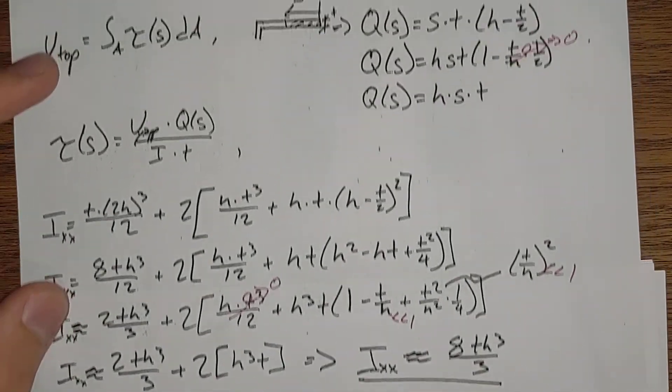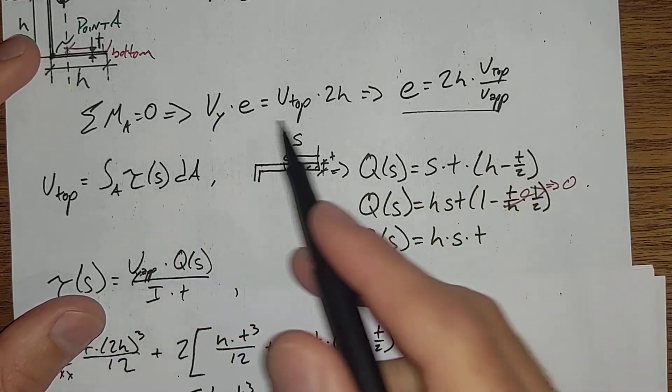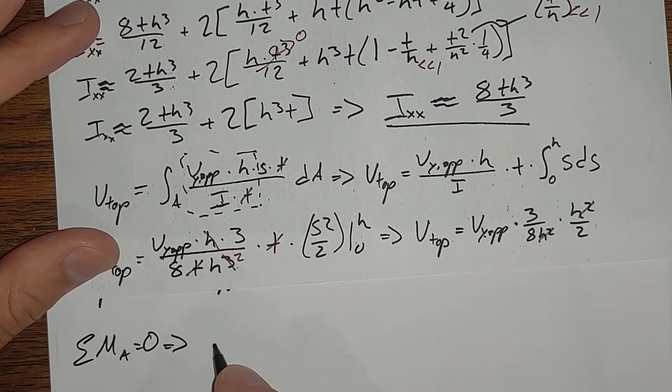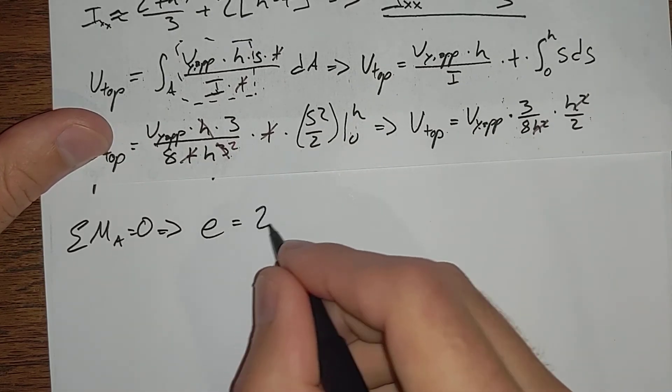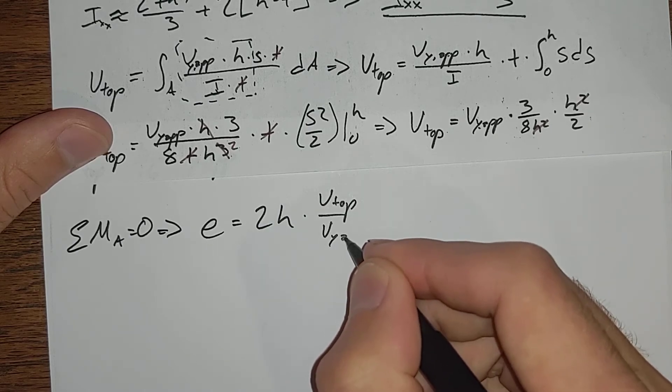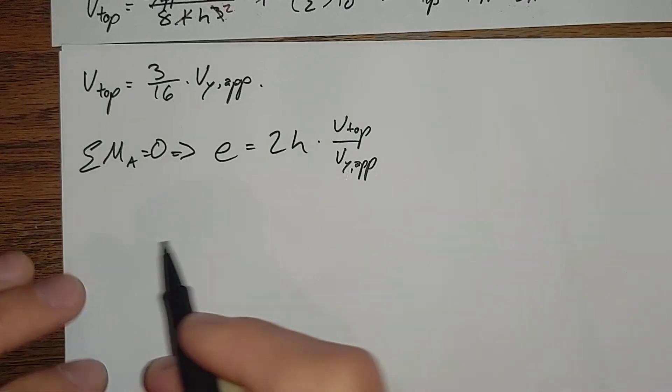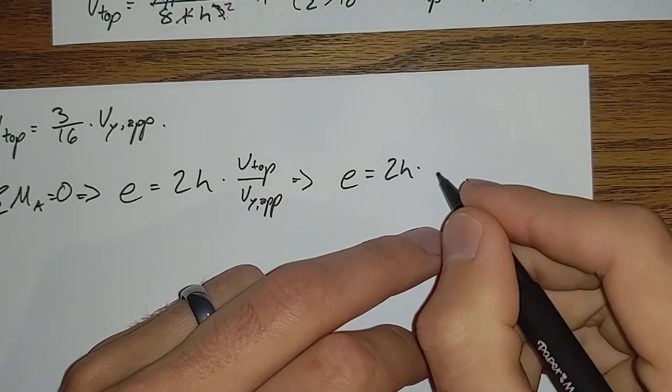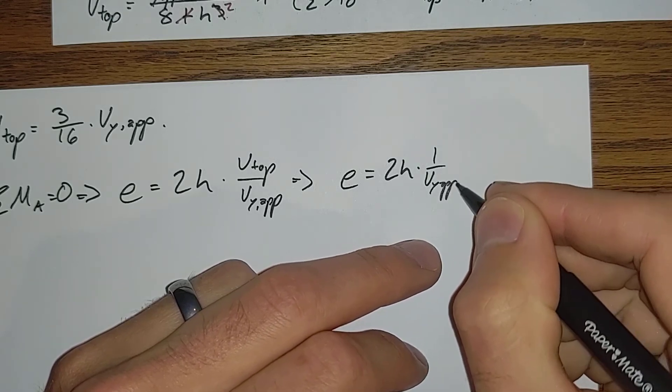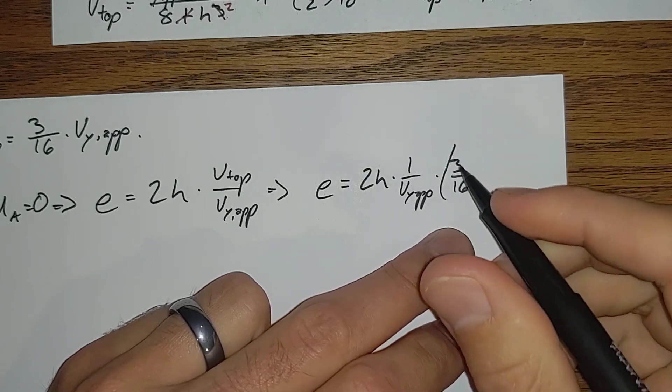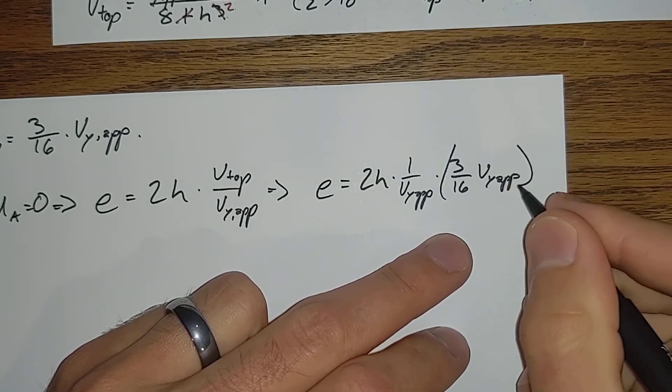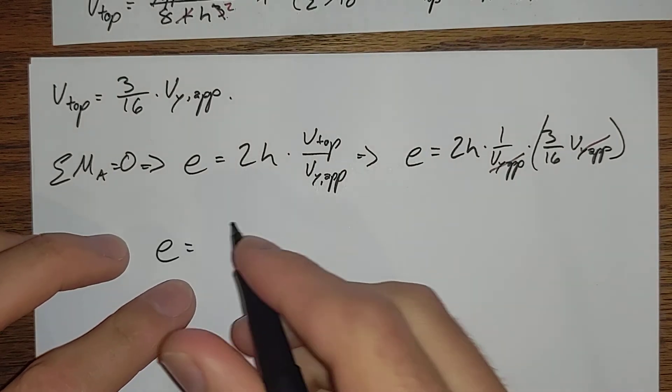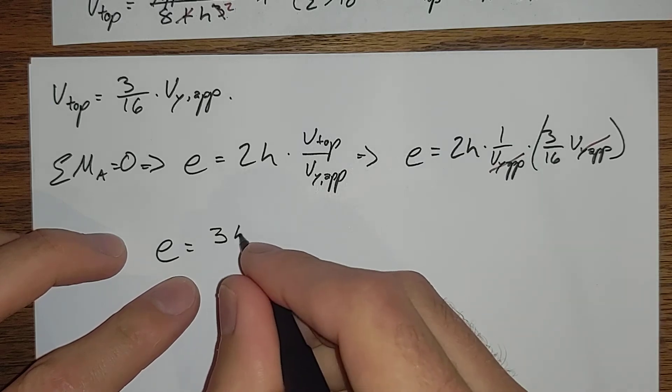And if we pull our sum of moments about A equation on down, sum of moments about A equals 0, gave us that e is equal to 2h V_top over V_y applied. E is equal to 2h times 1 over V_y applied. Our V_y applied's cancel.